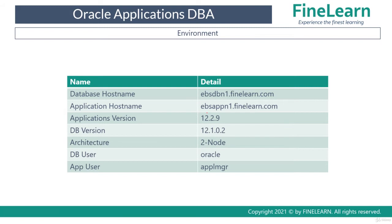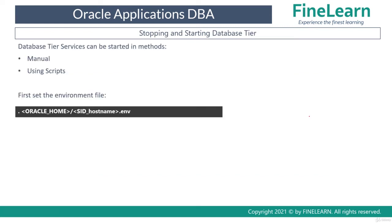The environment we're going to look at is basically a simple two-node environment where I have one node running the database and one node running the application tier. The version of E-Business Suite is 12.2.9 with database 12.1.0.2. On the database node the owner is the Oracle user, whereas on the application node the owner is the applmgr user.